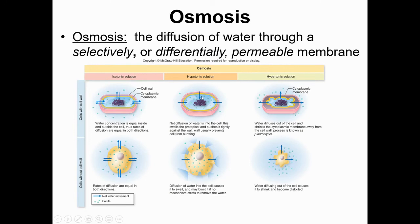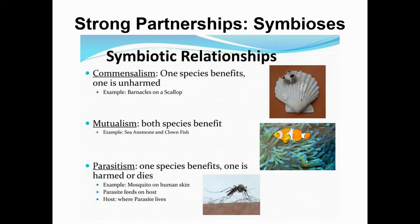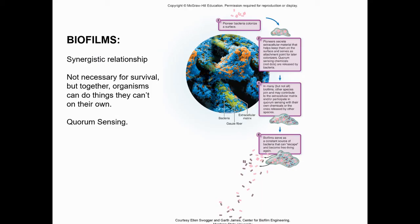The last part of this section deals with interactions between organisms — symbiotic relationships. Commensalism is where one species benefits and the other is unharmed. Mutualism, like us with our E. coli, is where both species benefit. Parasitism is where one species benefits and the other is harmed or dies. Biofilms are an example of a synergistic relationship — multiple species of bacteria living together, not necessarily required for survival, but together they can do things they can't do alone, like quorum sensing.